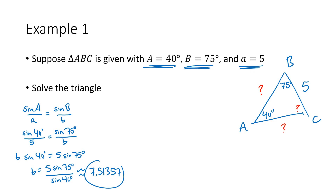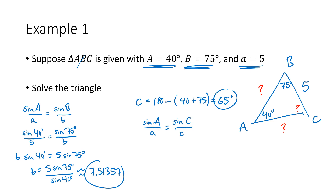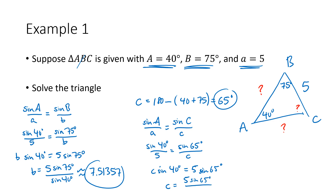For angle C, we know two of the three angles and that they must sum to 180 degrees, so C equals 180 minus 40 plus 75, which is 65 degrees. Then using the law of sines again — sine A divided by a equals sine C divided by c — we get c equals 5 times sine of 65 degrees divided by sine of 40 degrees, which works out to approximately 7.04982.